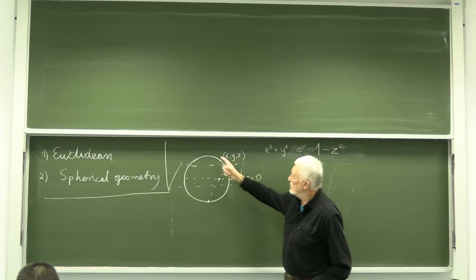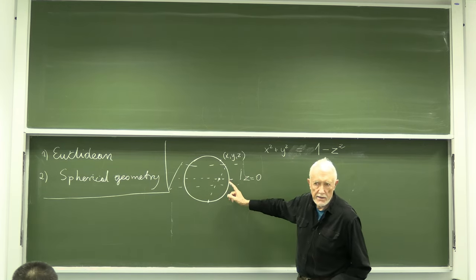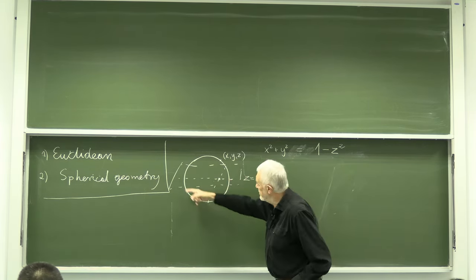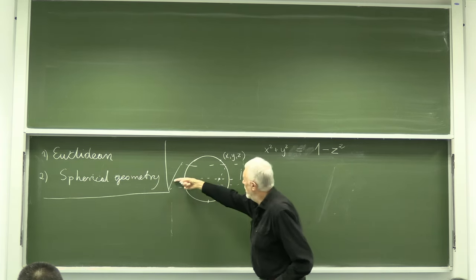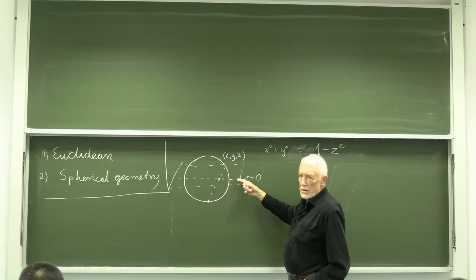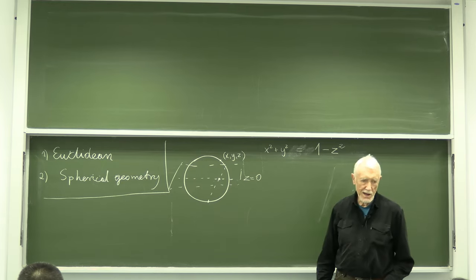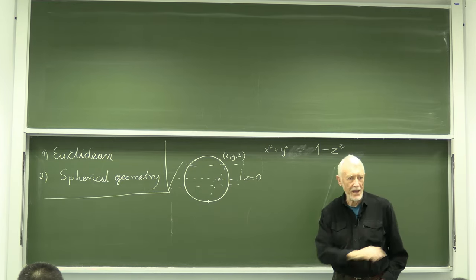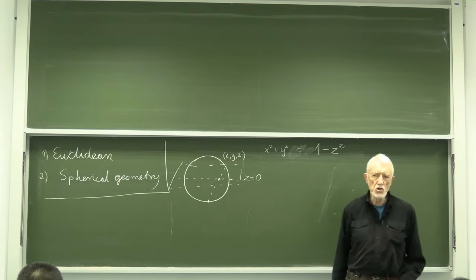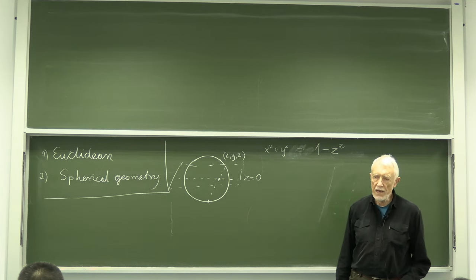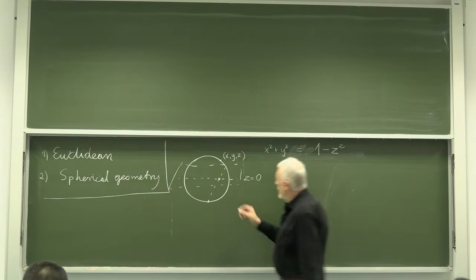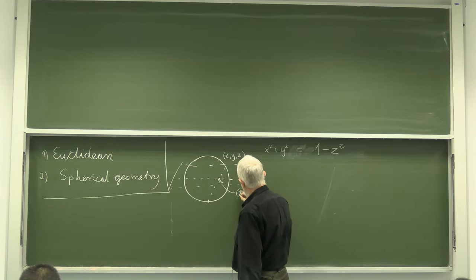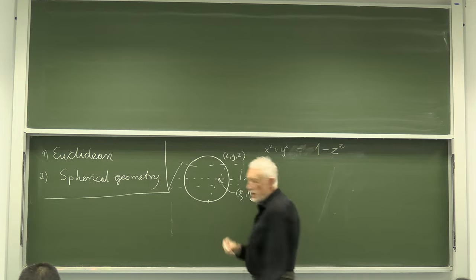There is a one-to-one correspondence between points of a sphere and points of this plane. If we choose coordinates on the plane, there are two of them — let me call them ξ (xi) and η (eta).